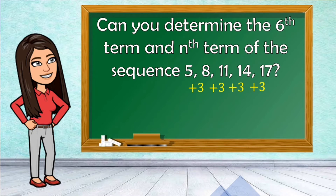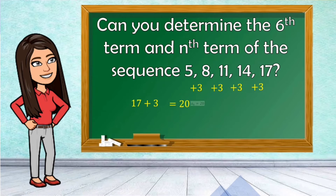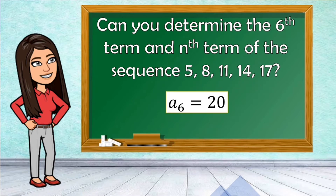Now, how many terms do we have? 1st term is 5, 2nd term is 8, 3rd term is 11, 4th term is 14, 5th term is 17. So to get the sixth term, the term after 17, we just need to add 3. So 17 plus 3 is 20. Therefore, a sub 6 or the sixth term is equal to 20.